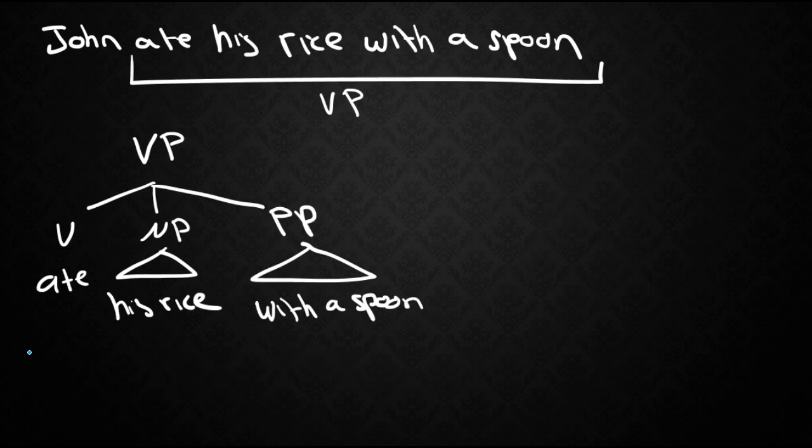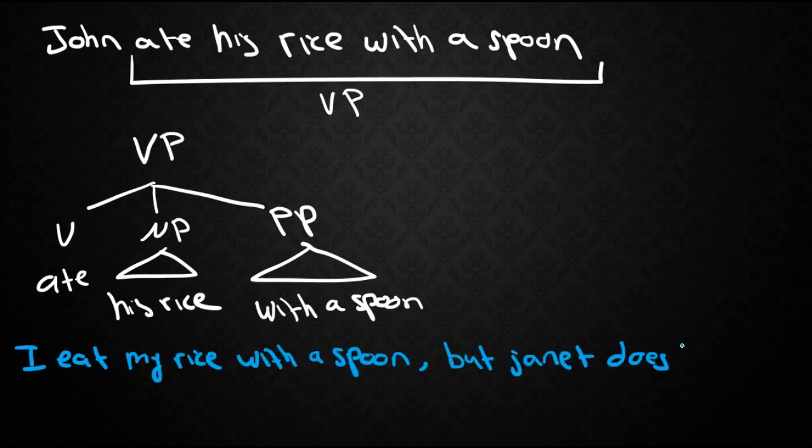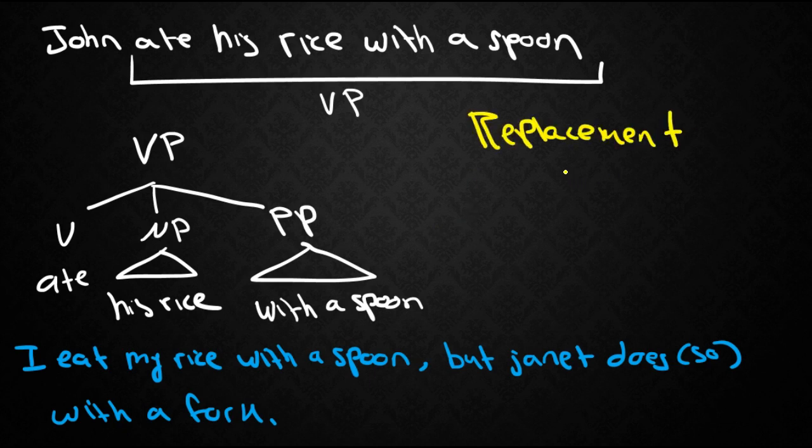Now you can imagine a sentence where I would say something like I eat my rice with a spoon but Janet does or sometimes we say does so with a fork. Now in our NP or the noun phrase lecture the constituency test we used was the replacement test. For noun phrases we used to replace with one.